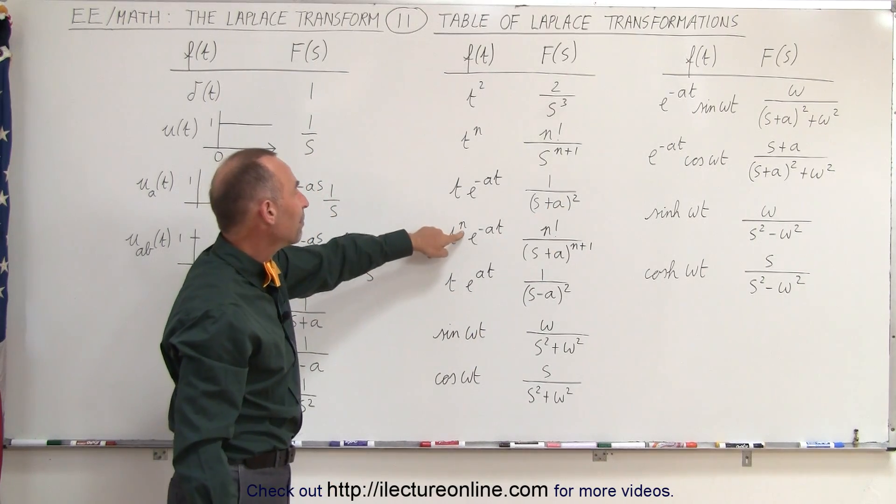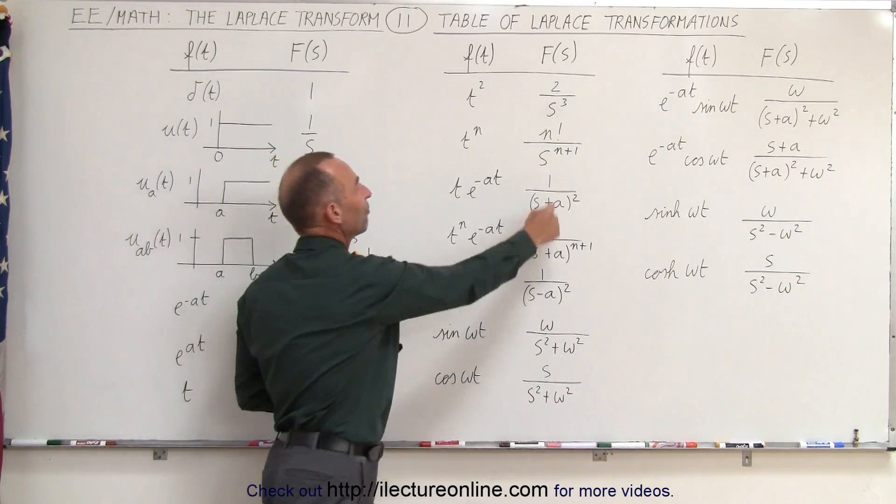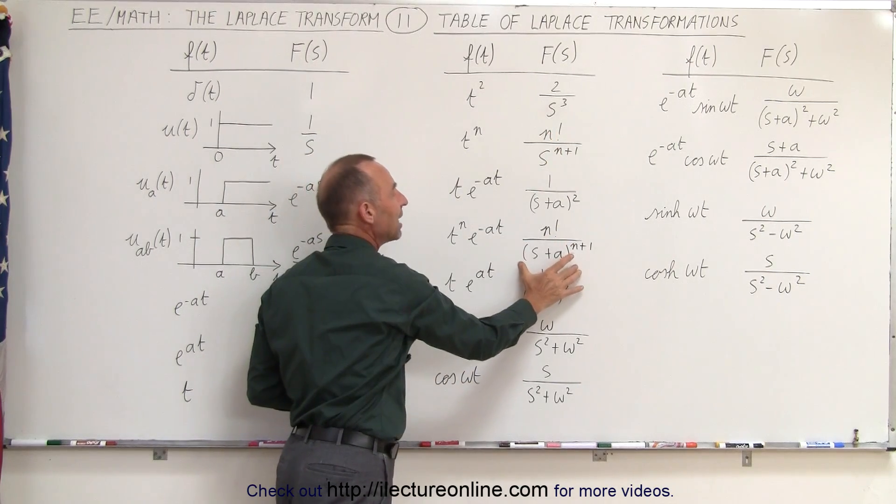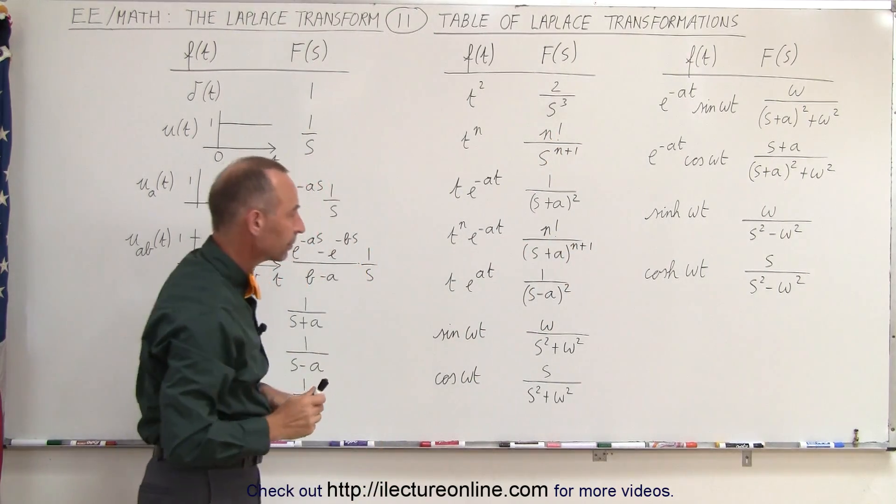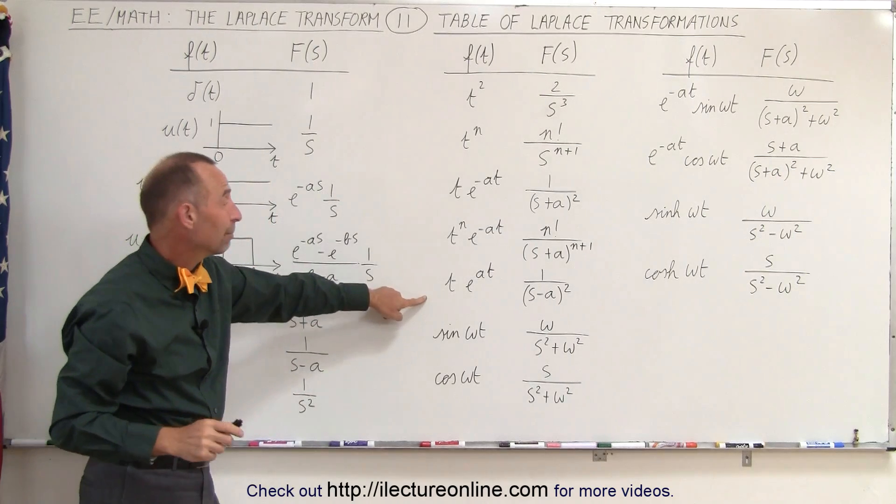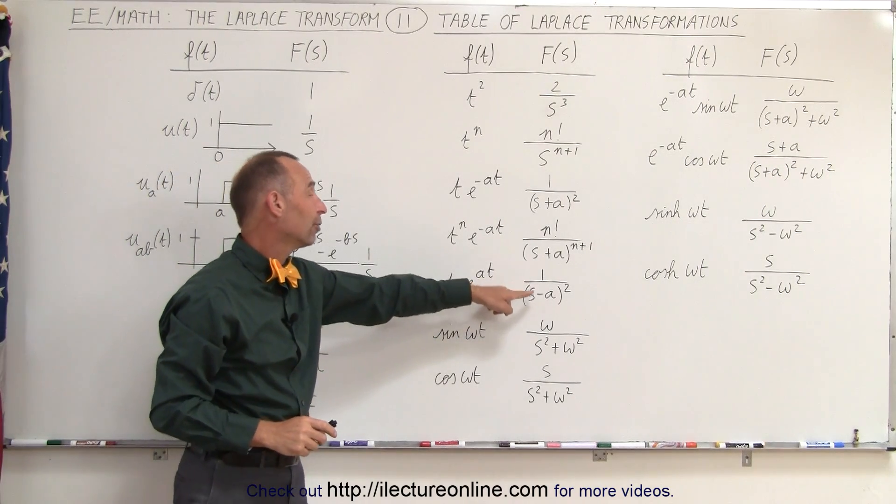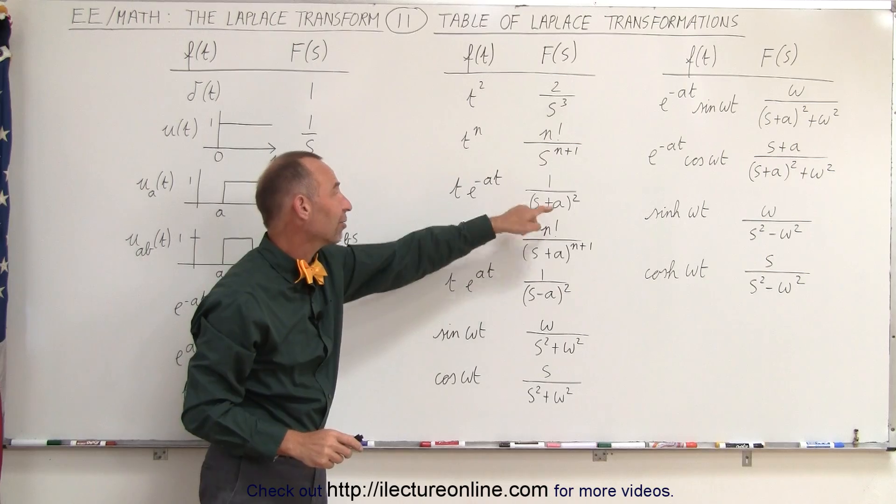If we have t to the n power, same thing, it'll be n factorial, like before, over (s plus a) to the (n plus 1). If it's t to the e plus at, then of course it becomes s minus a instead of s plus a.